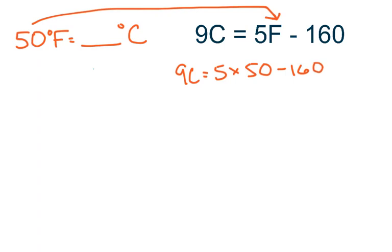So now you have to do order of operations. So the only thing I can do right now is multiply. So 5 times 50 is 250 minus 160. Bring everything else straight down. So 9C equals all that.